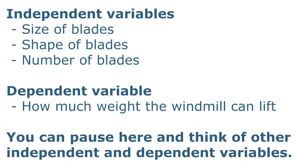During this activity, which is suitable for people of all ages, participants will not only learn about wind energy, but also independent and dependent variables. In this example, an independent variable might be the size, shape, or number of blades on the windmill. The dependent variable will be how much weight the windmill can lift, because it depends upon the changes you made to the windmill.